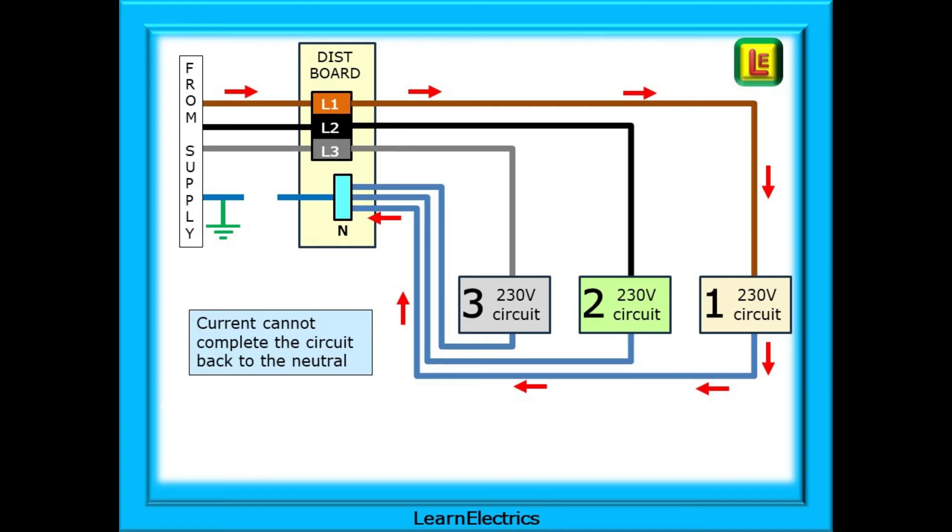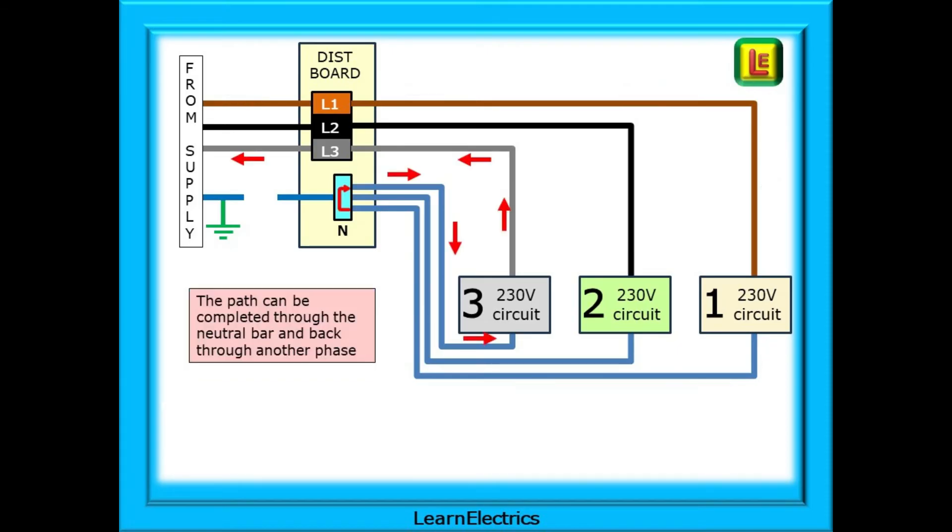The current cannot complete the circuit back to the neutral, but the electricity will try another path. It will always attempt to complete a circuit and find its way back to the source, back to where it came from, the supply transformer. And look, the path can now be completed through the neutral bar and back through another phase, L3 shown here. That is a path back to the source. It doesn't need the neutral connection and now our problems begin.